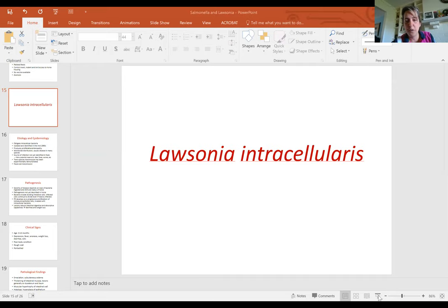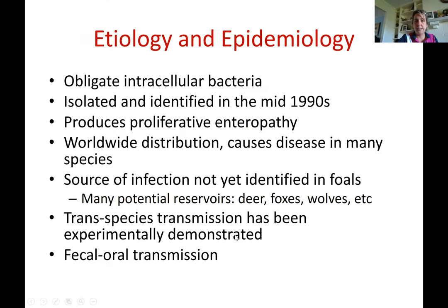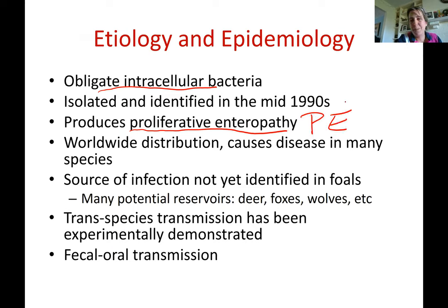These are the key things to understand: it affects young horses, we don't know the reservoir, and it causes proliferative enteropathy. It is more well-described in swine than in horses. It's an obligate intracellular bacteria first described in the mid-1990s, with worldwide distribution causing disease in many species. The source of infection in foals has not been identified yet, and trans-species transmission has been shown in laboratory settings but not fully understood in nature.